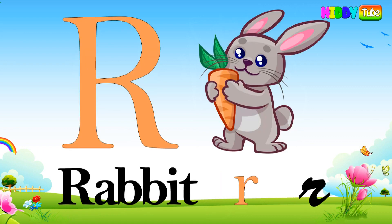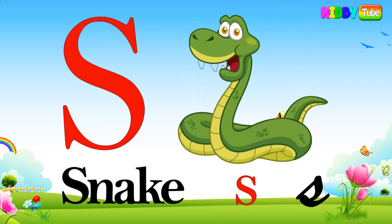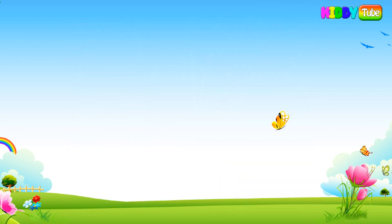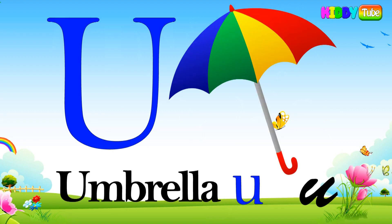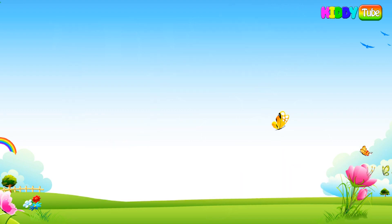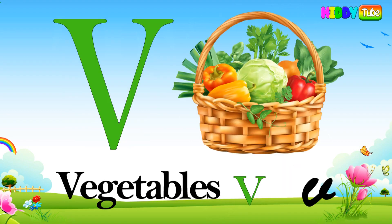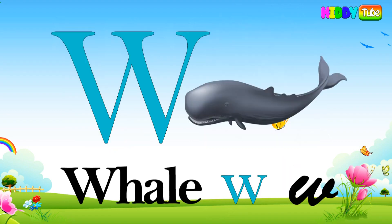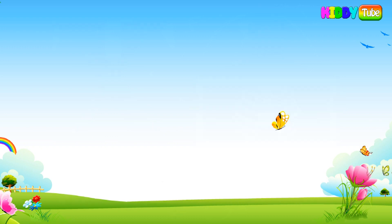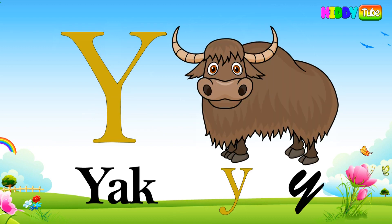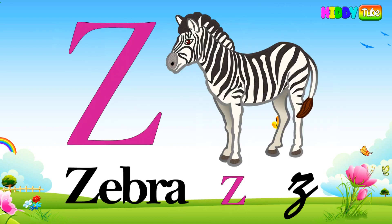R for rabbit, S for snake, T for turtle, U for umbrella, V for vegetable, W for whale, X for x-ray, Y for yak, Z for zebra.